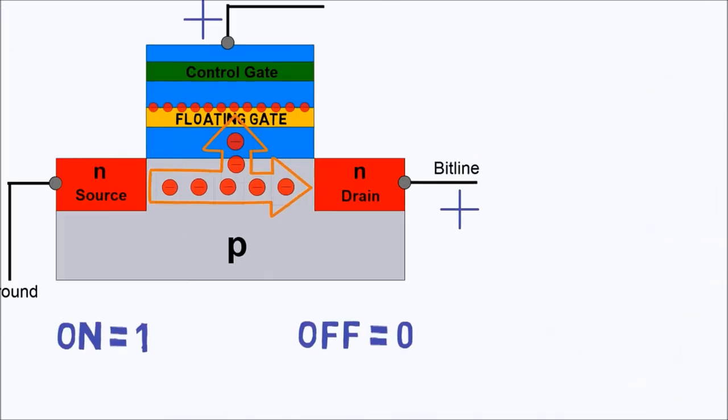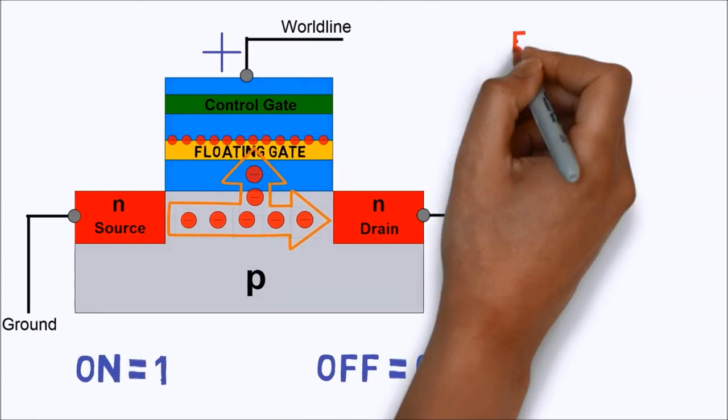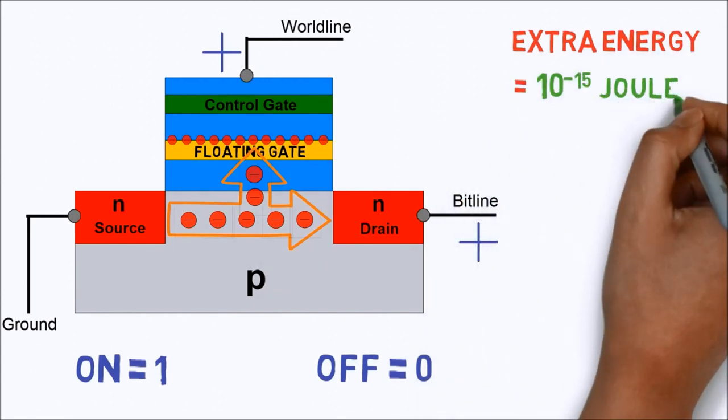Although the electrons were already present, keeping them still rather than allowing them to float around takes up extra energy, about 10 to the power minus 15 joules per bit of data.